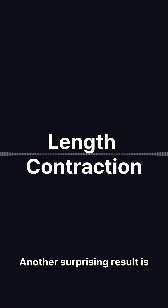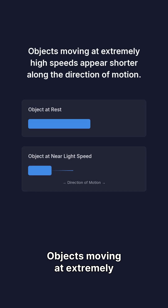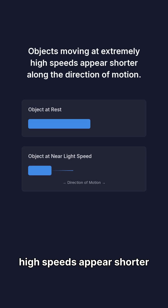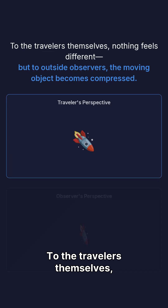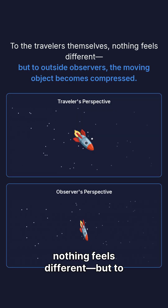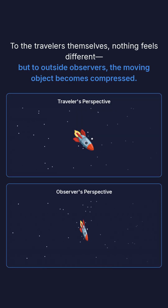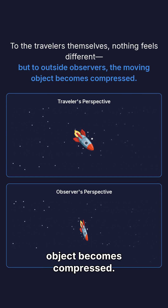Another surprising result is length contraction. Objects moving at extremely high speeds appear shorter along the direction of motion. To the travelers themselves, nothing feels different. But to outside observers, the moving object becomes compressed.